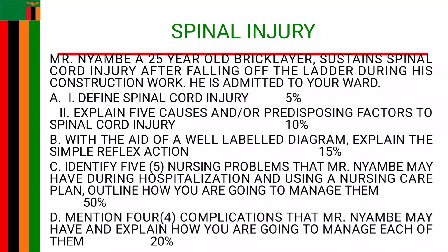Question A2: Explain five causes or predisposing factors to spinal cord injury. The first one, like the scenario, is trauma itself — the commonest cause, which can occur due to accident or violence. For example, a motor vehicle accident, falls from height like our scenario, sports injuries, or acts of violence such as a stab or gunshot injury to the spinal region.